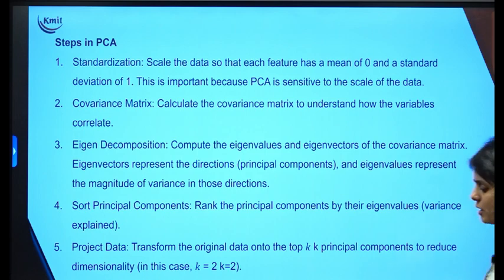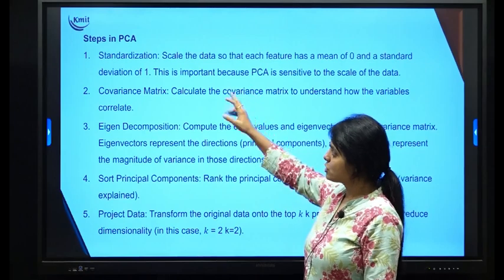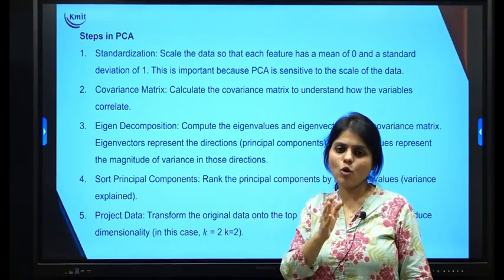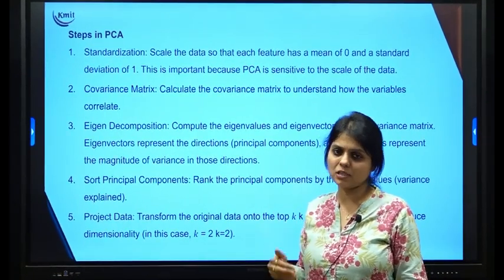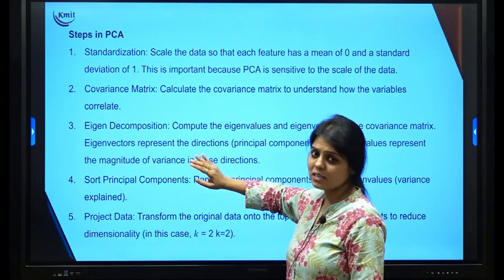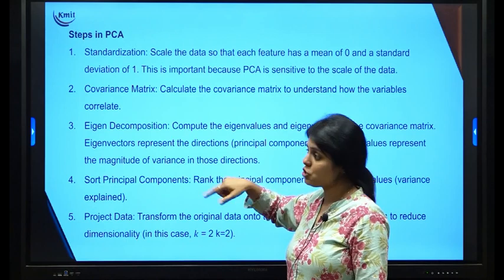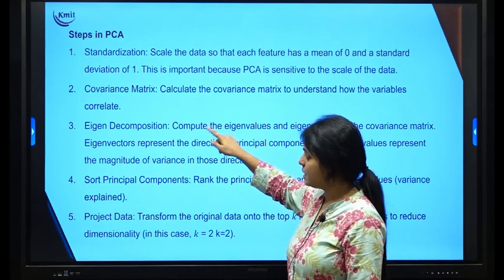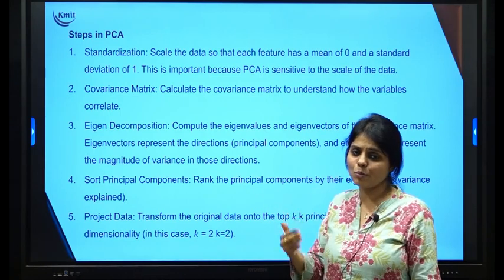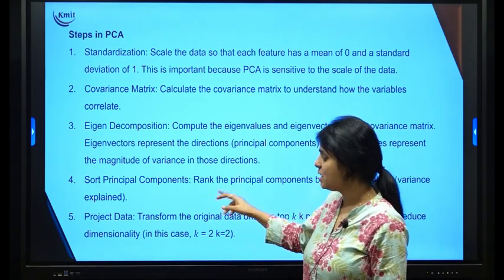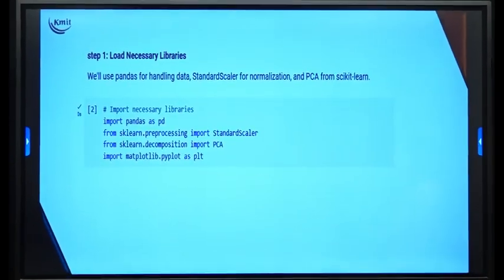The theoretical steps of PCA are divided into five steps. First, we perform standardization so all features with different value ranges have equal importance. Then we find the covariance matrix and apply eigenvalues and eigenvectors — one for each row and dimension — called eigen decomposition. Next we sort the required PCA components, and finally we project the data and make the required changes.